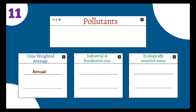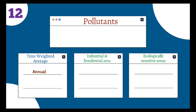The eleventh pollutant is arsenic (As), and its unit is also nanograms per meter cube. For arsenic, in both industrial and ecologically sensitive areas, the annual value should not exceed 6 ng/m³. The twelfth pollutant is nickel (Ni), and its unit is also nanograms per meter cube. In both industrial and ecologically sensitive areas, the measured value should not exceed 20 ng/m³.